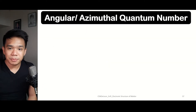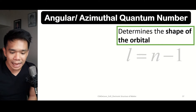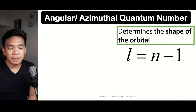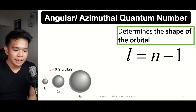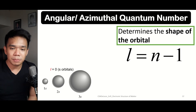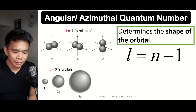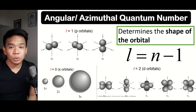Next, we have the angular or azimuthal quantum number L, which determines the possible shapes of the orbital. It can be determined by the formula L = N − 1, where N is the value of the principal quantum number. For L equal to 0, there is only one possible shape of the orbital, which is a solid sphere. For the P orbital, there is one shape with varying orientations, and for L equal to 2, there are two possible shapes.